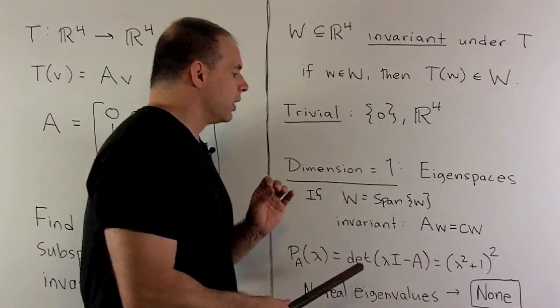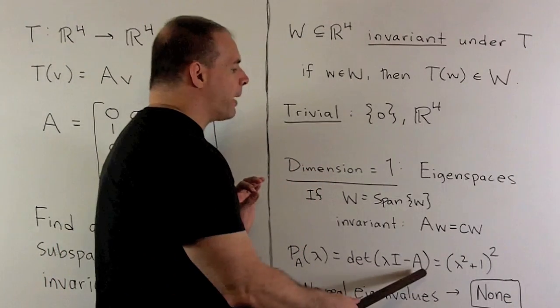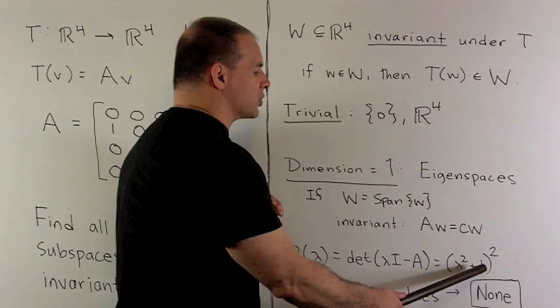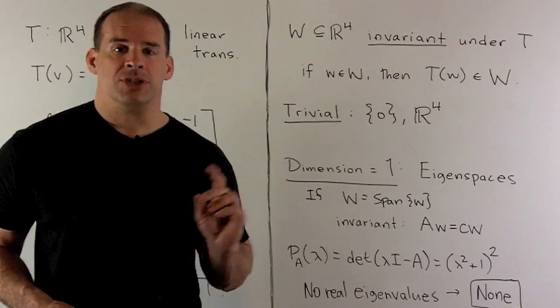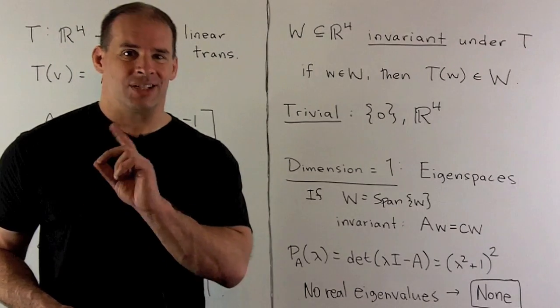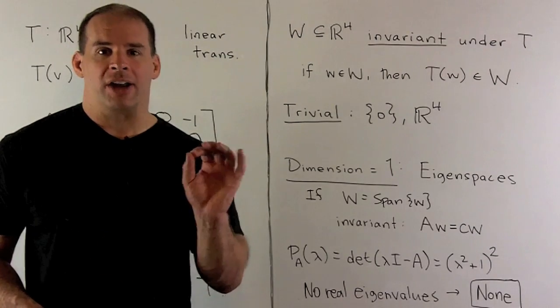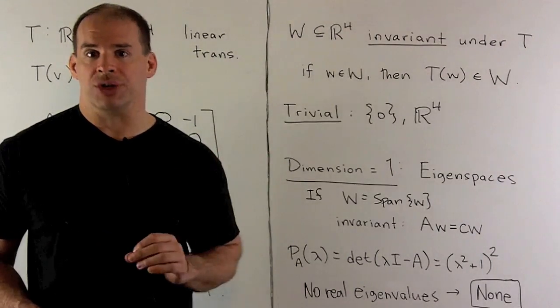In this case, when you work out your characteristic polynomial, we get lambda squared plus 1 squared, and that has no real eigenvalues. So, for this matrix, this linear transformation, we're not going to have any invariant one-dimensional subspaces.